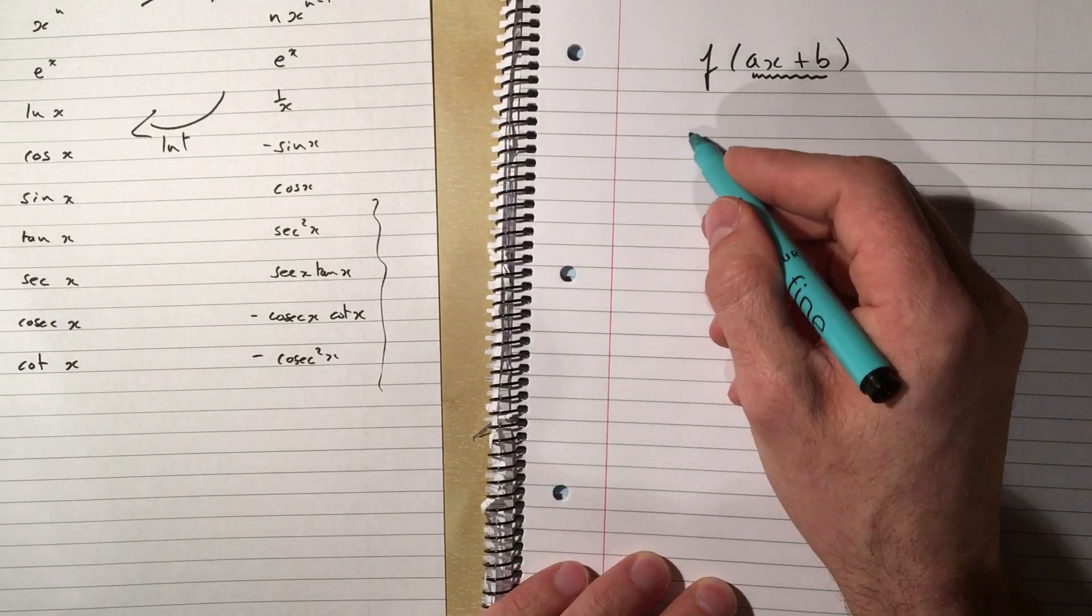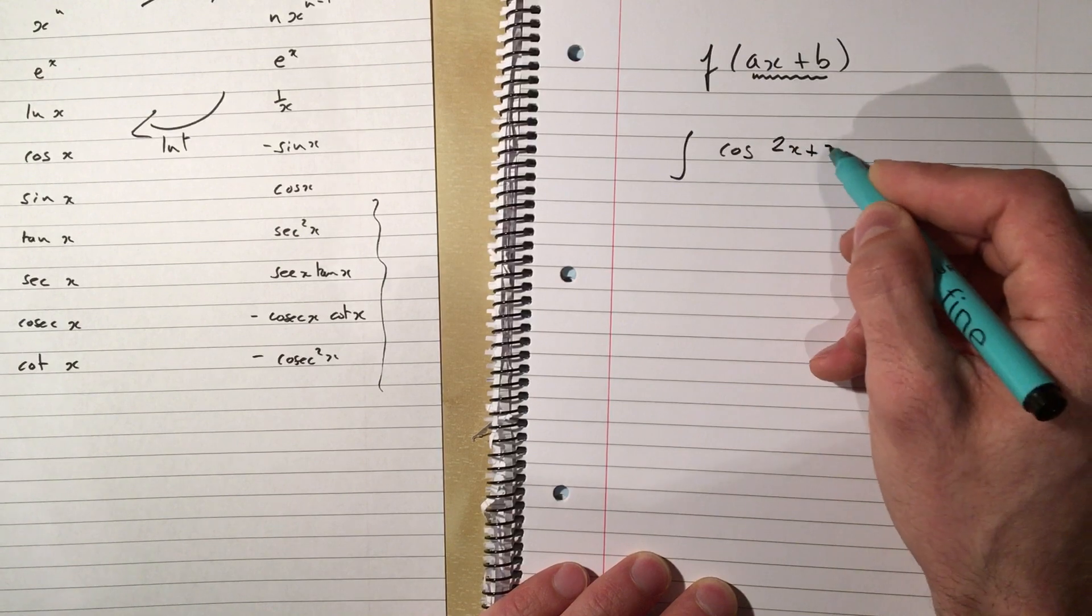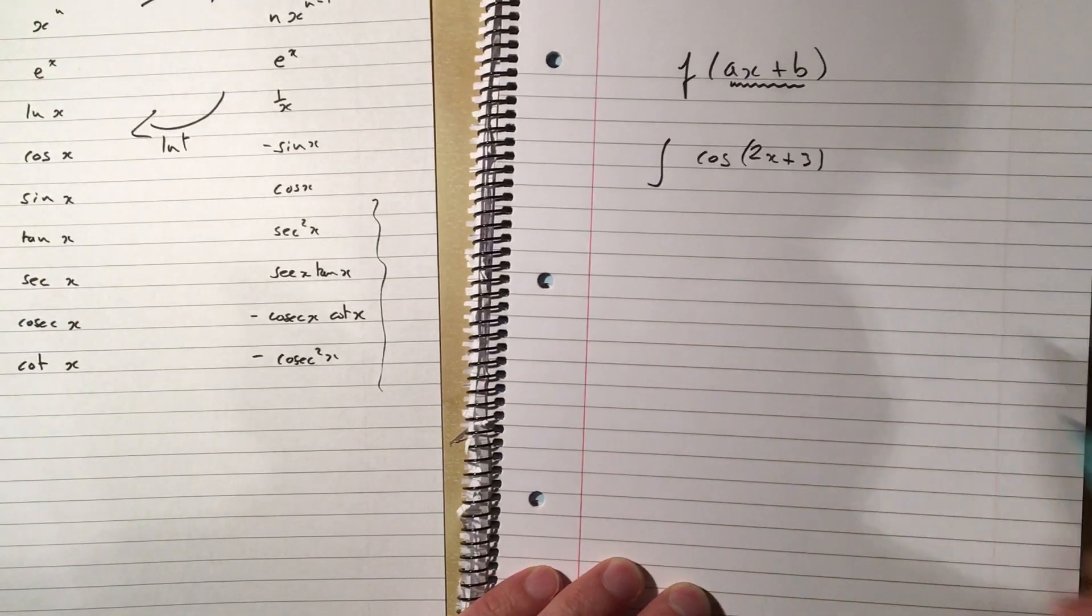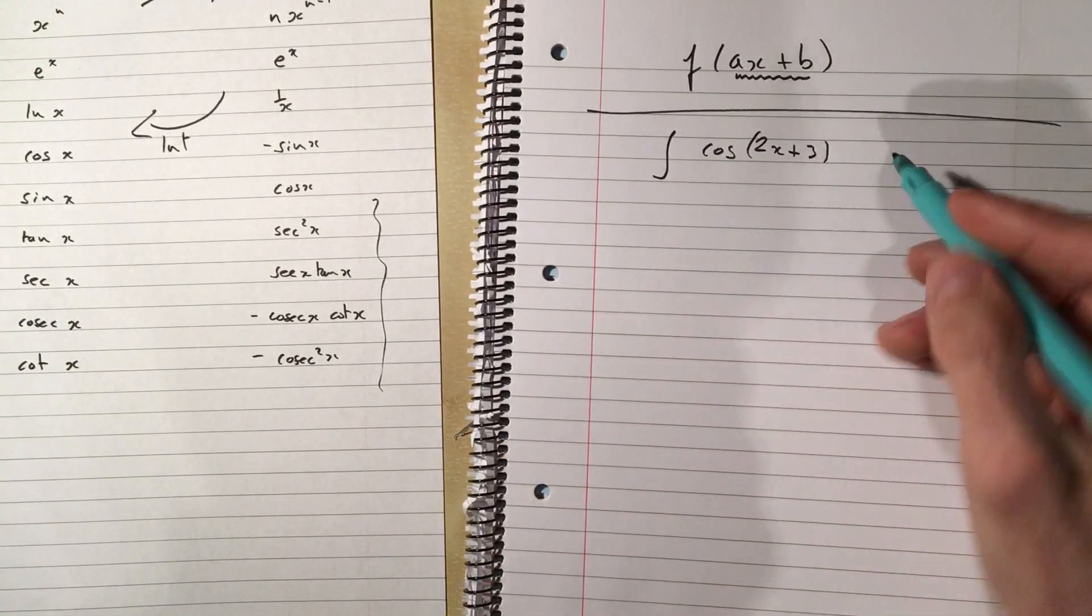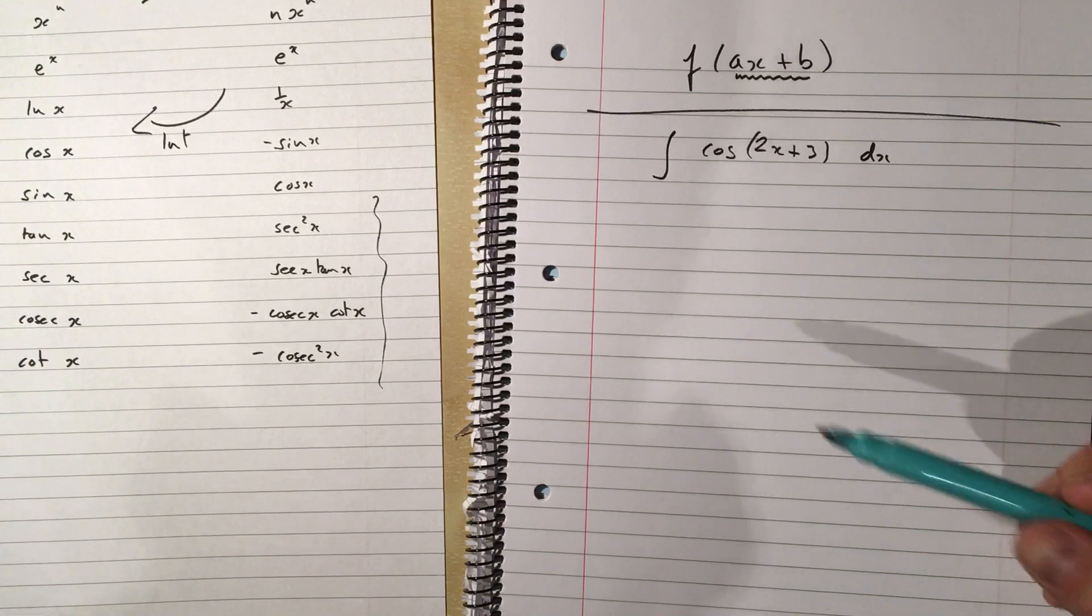So for example, if I'm trying to integrate cos of 2x plus 3. The way that we deal with that is like this. I know that the way we deal with all integration is: what did we have to differentiate to get to here? That's the way we think of integration.